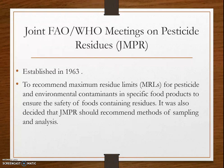The JMPR carries out toxicological evaluation of pesticide residues, normally resulting in an estimate of the Acceptable Daily Intake (ADI). It also proposes Maximum Residue Limits (MRLs) for individual pesticides in specific commodities, primarily based on residue levels estimated in supervised field trials when the pesticide is used according to good agricultural practices. Where initial estimates indicate the ADI may be exceeded, more refined intake calculations are performed using national food consumption data and pesticide residual monitoring programs.